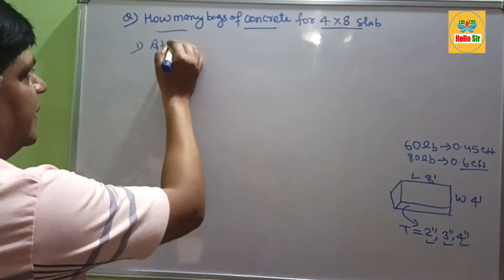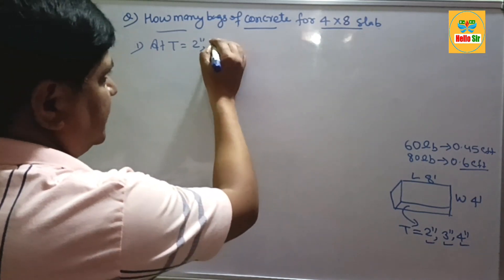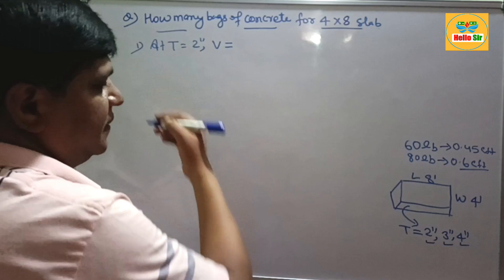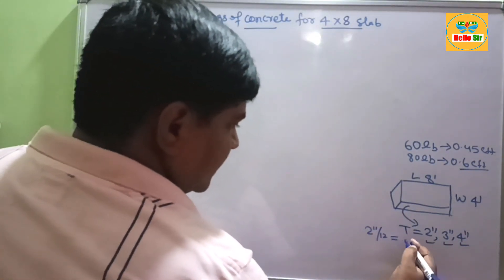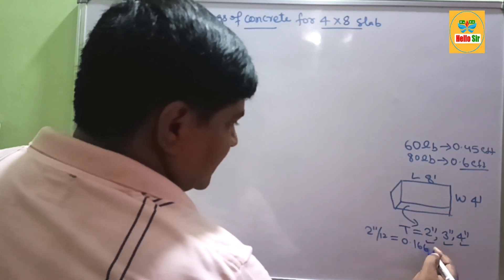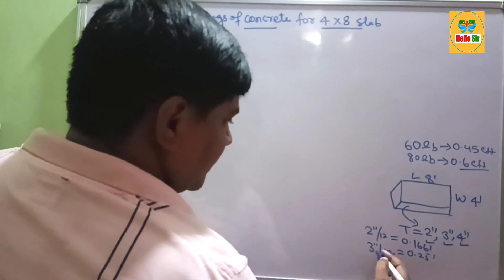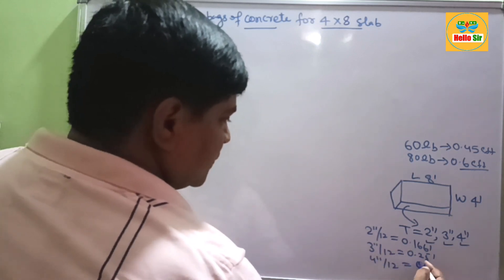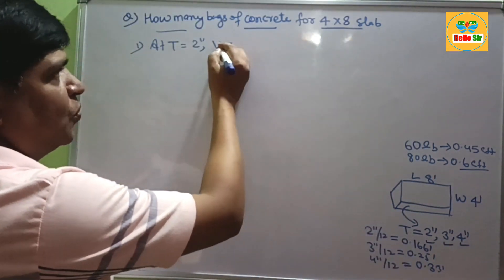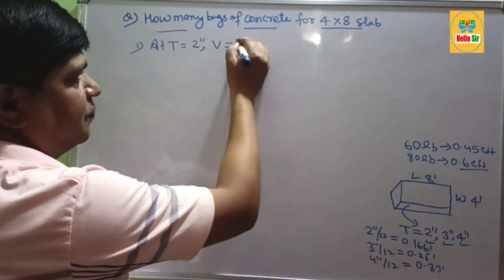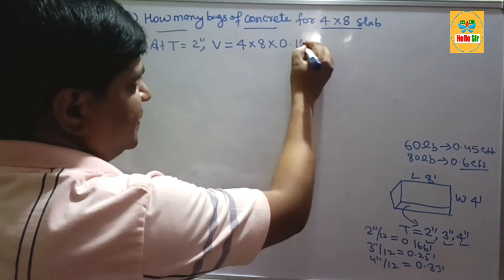At thickness 2 inches, how much concrete bag is required? First we find out the volume of concrete at 2 inches. 2 inches, if you convert this in feet, this will be 0.166 feet. And 3 inches is about 0.25 feet. And 4 inches is about 0.33 feet — these values will be used in the calculation. Volume equals length times width times thickness: 8 times 4 times 0.166 feet.